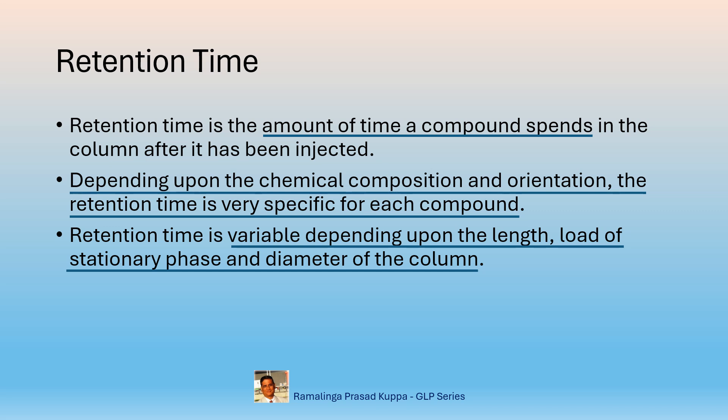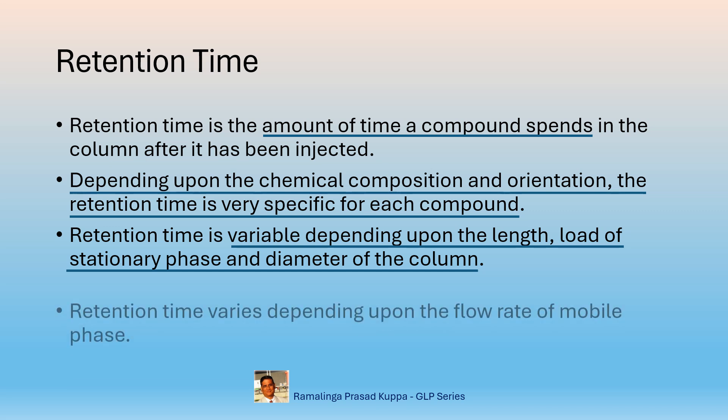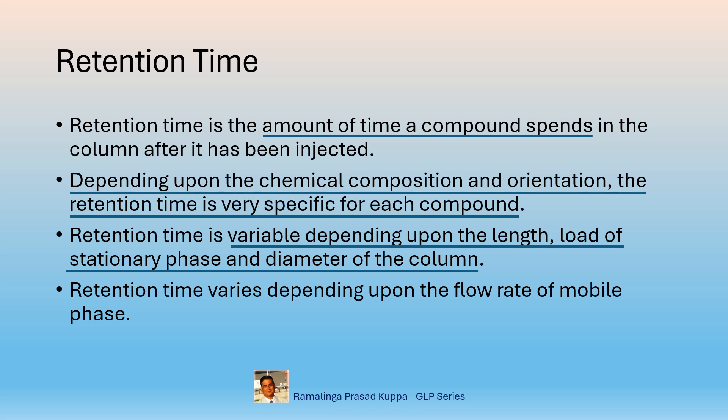Similarly, if the length of the column is reduced, the retention time will be shorter. The same thing will happen for different loadings of the stationary phase. If the stationary phase load is more, the retention time will be longer, and vice versa. Retention time also varies depending upon the flow rate of the mobile phase. Faster the mobile phase rate, sooner the peak elutes — that means lower the RT. Slower the rate of flow of the mobile phase, longer the RT.